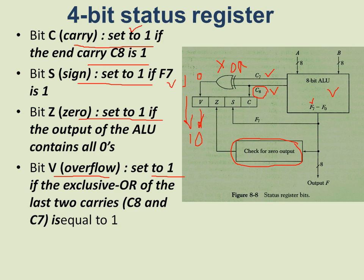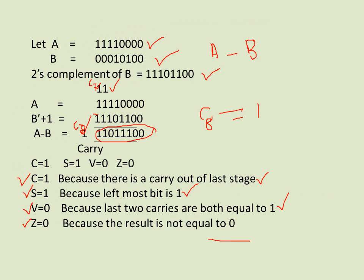Here we have a numerical example. We take values A and B, subtract them using 2's complement and add the result. The result gives us: carry bit C=1, sign bit S=1, overflow V=0, and zero bit Z=0. Carry is 1 because the value of C8 (the last carry out) is 1, and S=1 because the leftmost bit F7 is 1.